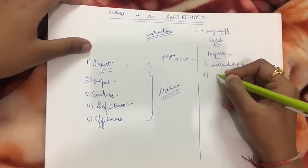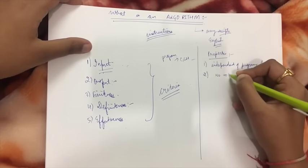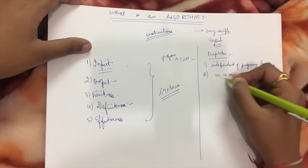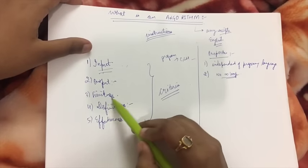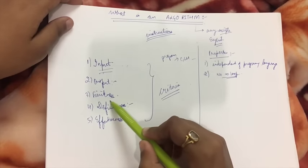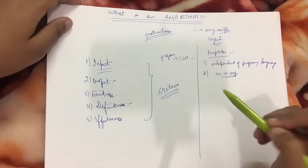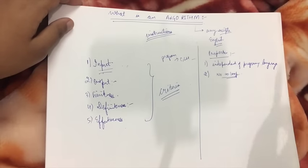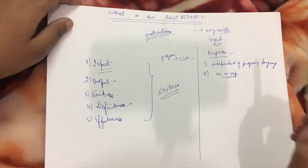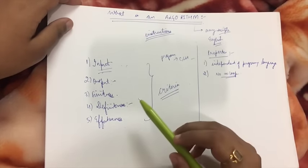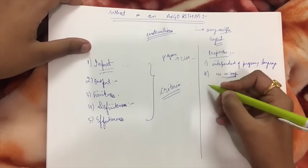The second property is that there should be no infinite loop, because if there is an infinite loop it will never be able to fulfill this criteria. It will keep on running till infinity and not stop until stopped externally, and that is not a valid criteria for the algorithm.